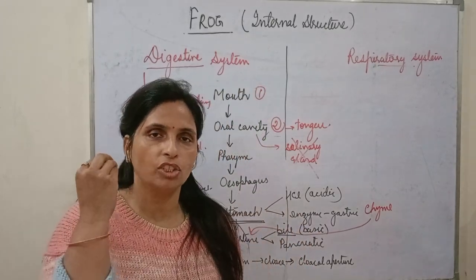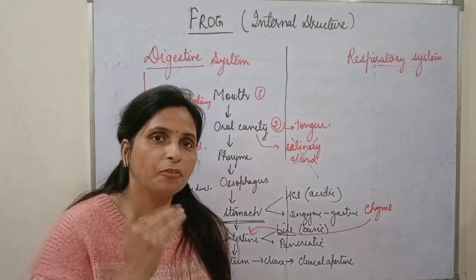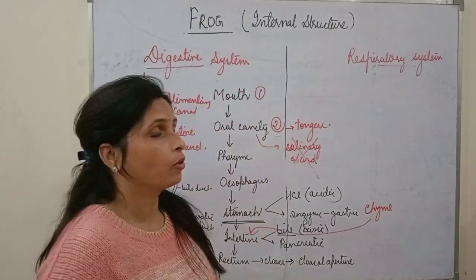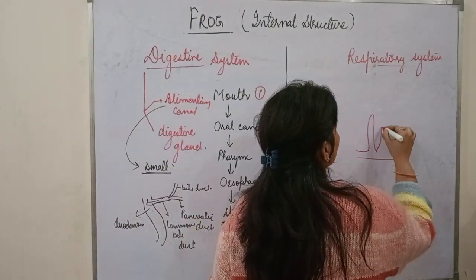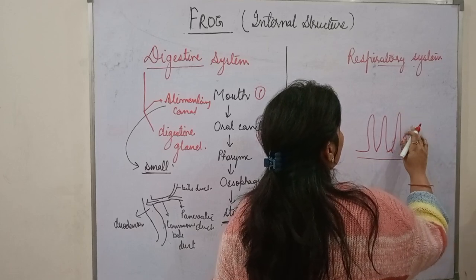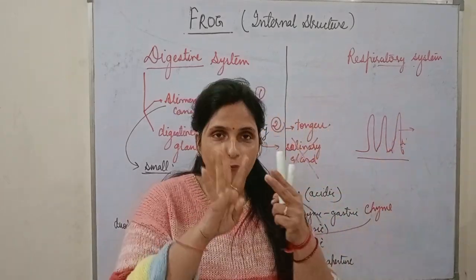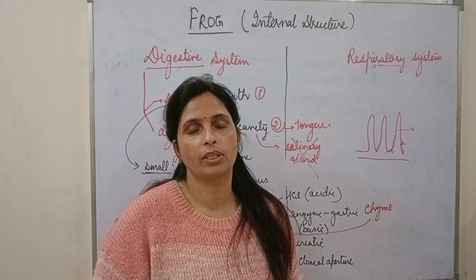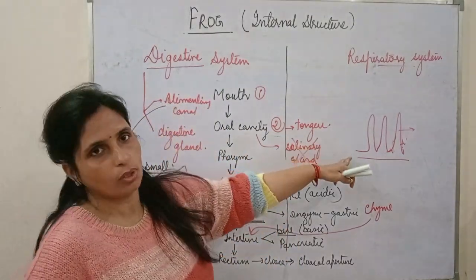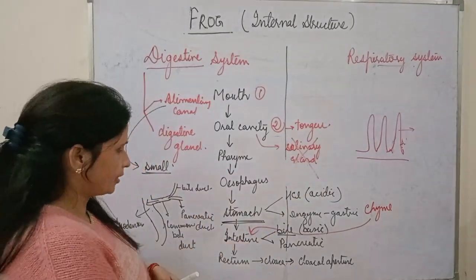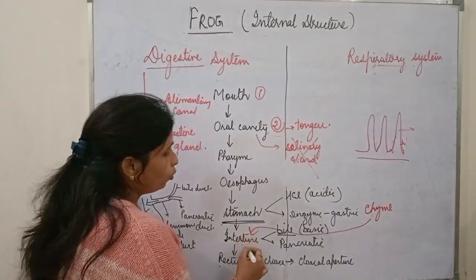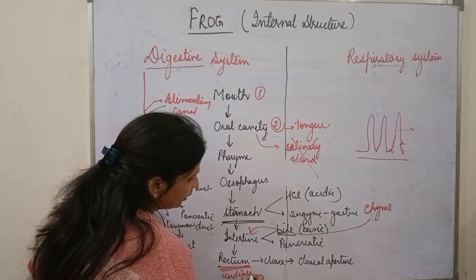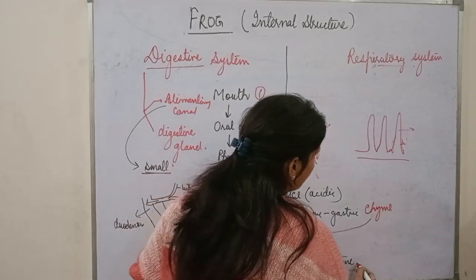The digestion is completed in the small intestine, and absorption also takes place in the small intestine with the help of villi and microvilli — finger-like projections that increase the surface area. The digested food is absorbed into the blood through these structures. The undigested food then moves to the rectum, then into the cloaca, and exits the body through the cloacal aperture.